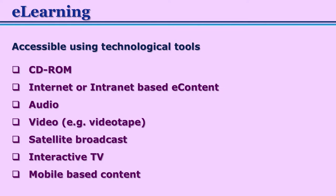Let us see what all electronic devices are used in e-learning. It can be CD-ROM, internet or intranet based material, audio or video devices such as videotape, or satellite broadcast, interactive television, or mobile-based content. Apart from these, there may be internet or intranet based communication, or mobile-based communication. For example, tools such as WhatsApp can also be considered as tools used for e-learning experiences.